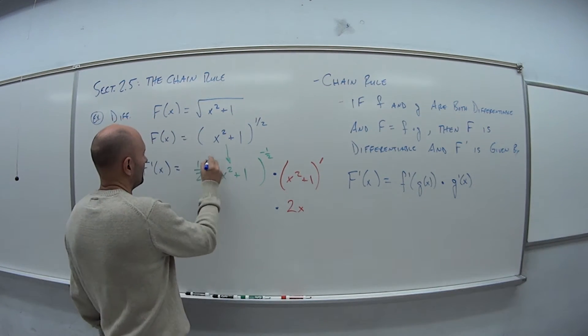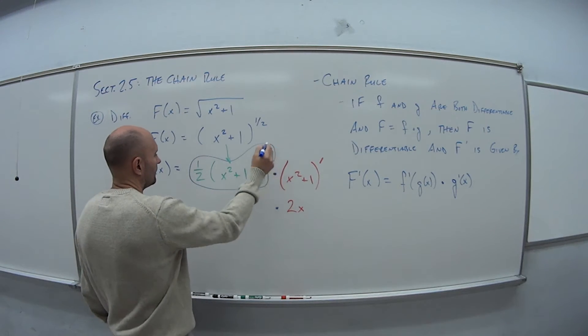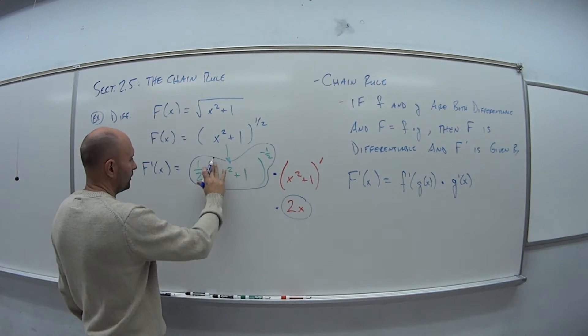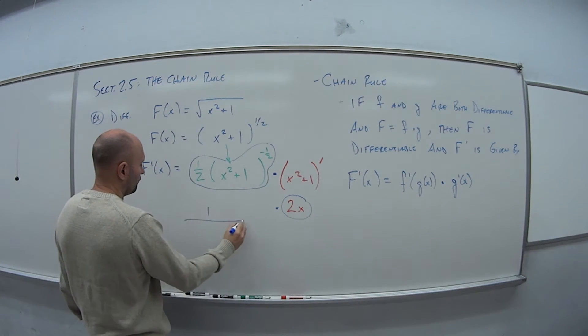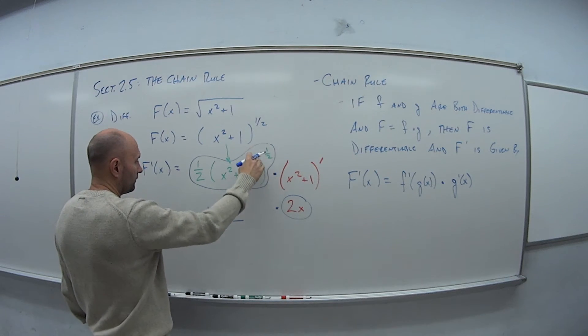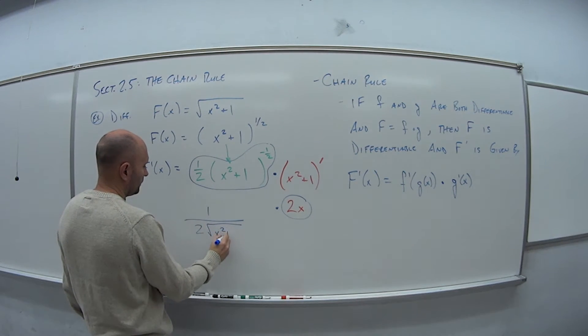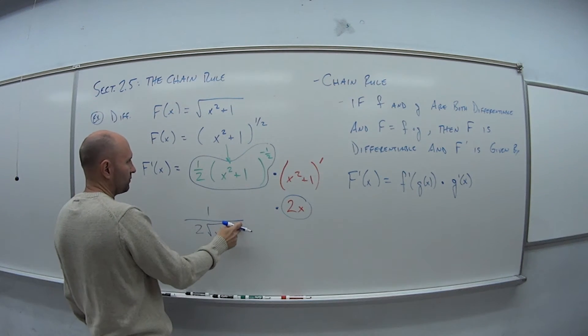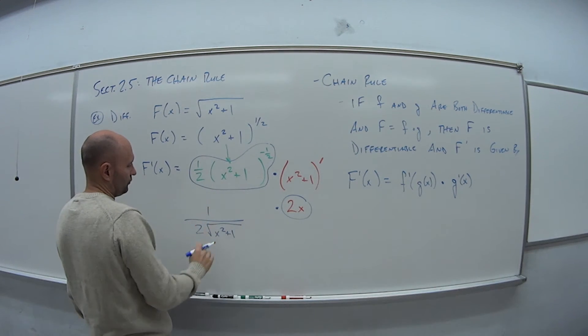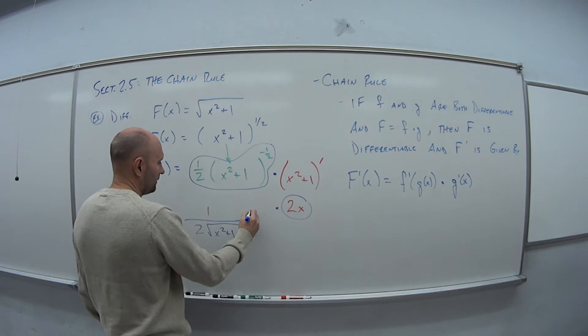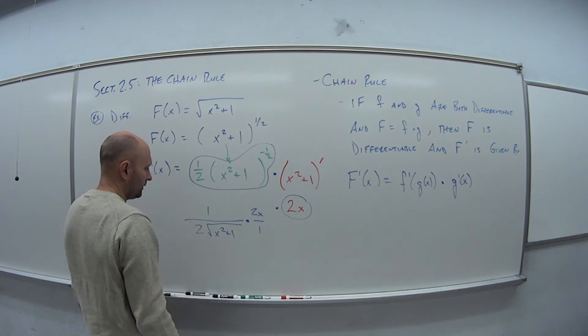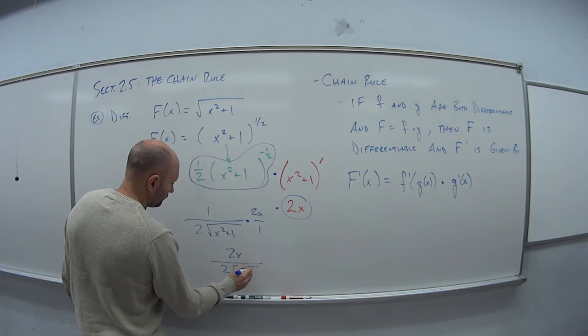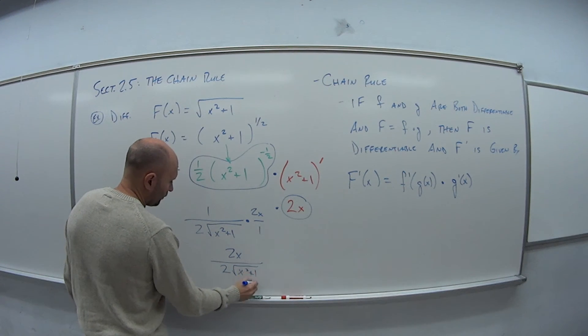So what am I left with? I'm left with this piece and I'm left with this piece. And I have to multiply these two together. This one here I can rewrite as what? This is one over two times the square root of x squared plus one. So I'm bringing this piece into the denominator so I can make the exponent positive, which is positive one-half, which is just the square root. And I'm multiplying that by this guy, 2x over one.